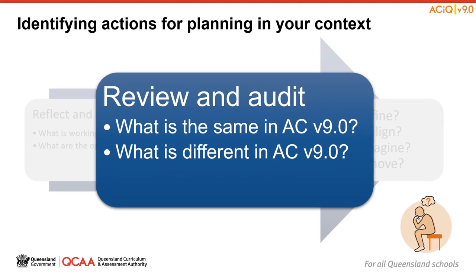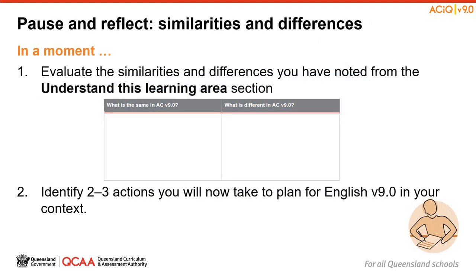To finish this session, let's revisit the task we set ourselves as we began exploring the Understand This Learning Area section. What have you learned in this first session about what is the same and what is different in English Version 9? Consider how the changes will inform your planning by reviewing the similarities and differences you have noted throughout the session. What actions will you take to help prepare your plans for Version 9? For example, you may identify the following actions to support the transition to Version 9 in your context.